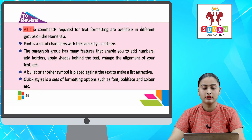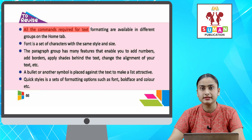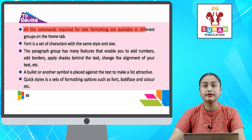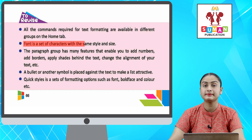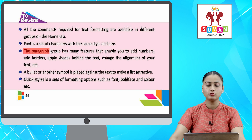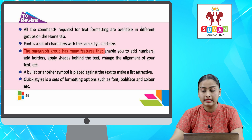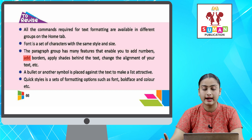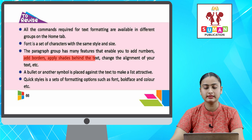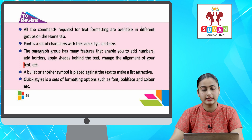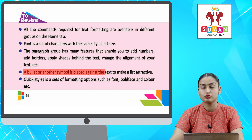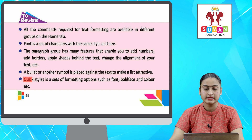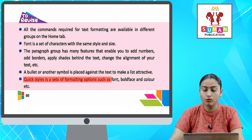To revise: All the commands required for text formatting are available in different groups on the Home tab. Font is a set of characters with the same style and size. The Paragraph group has many features that enable you to add numbers, add borders, apply shades behind the text, change the alignment of your text, etc. A bullet or another symbol is placed against the text to make a list attractive. Quick styles is a set of formatting options such as font, bold face, and color, etc.